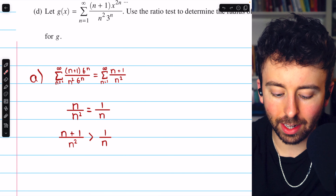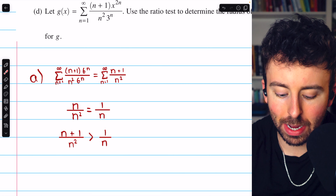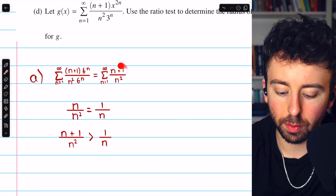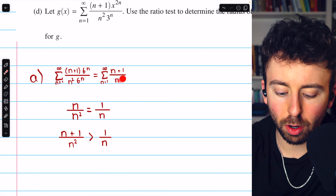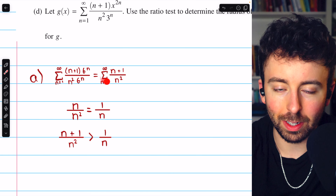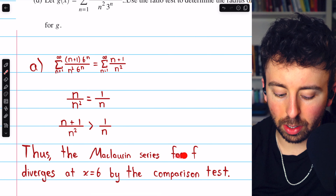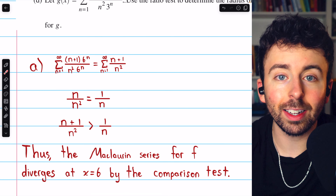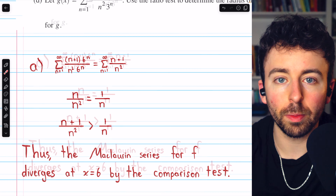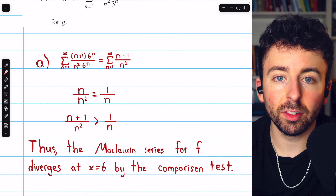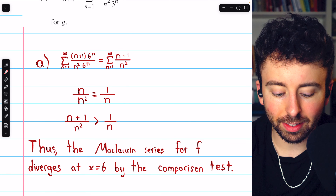If we add 1 to the numerator, we make it bigger than 1 over n, and this is the terms of our series. So the terms of this series are bigger than the terms of the harmonic series, and so this series must diverge also. The Maclaurin series for f diverges at x equals 6 by the comparison test. The harmonic series diverges, and this series consists of terms greater than the harmonic series terms. Both series consist of positive terms, so we can use the comparison test.